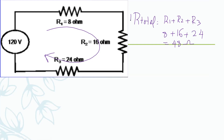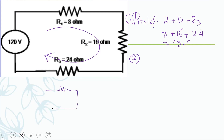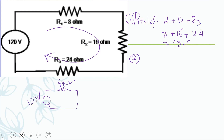That is the first step — R total equals forty-eight ohms. For the second step, after finding the combined resistance, I can redraw the circuit with only one resistance. I combine them into one resistance of forty-eight ohms with a battery of one hundred twenty volts. This simplified circuit lets me find the current.